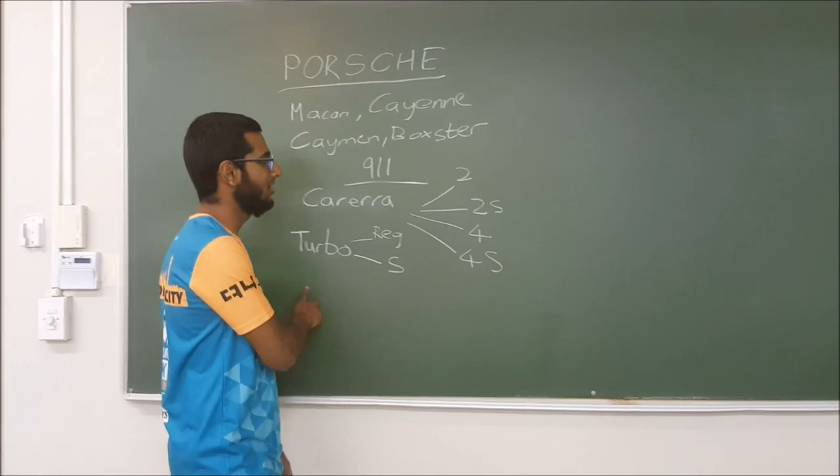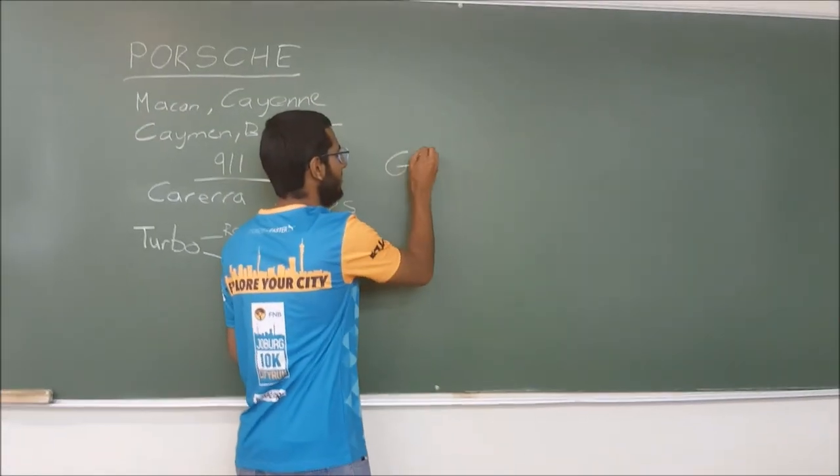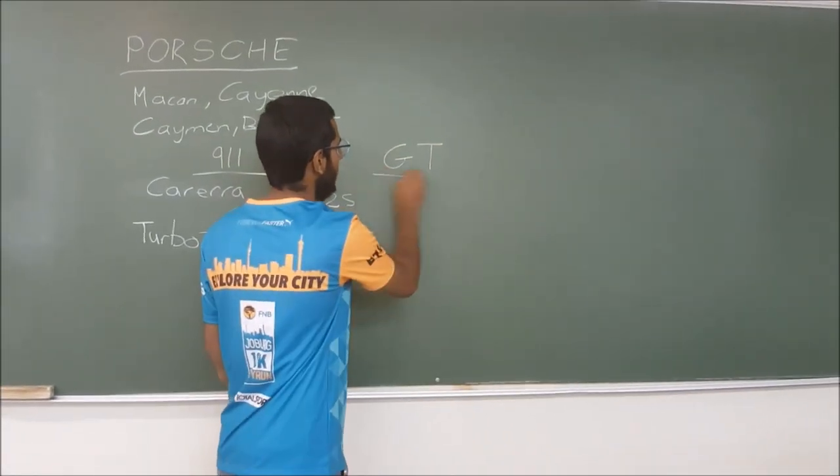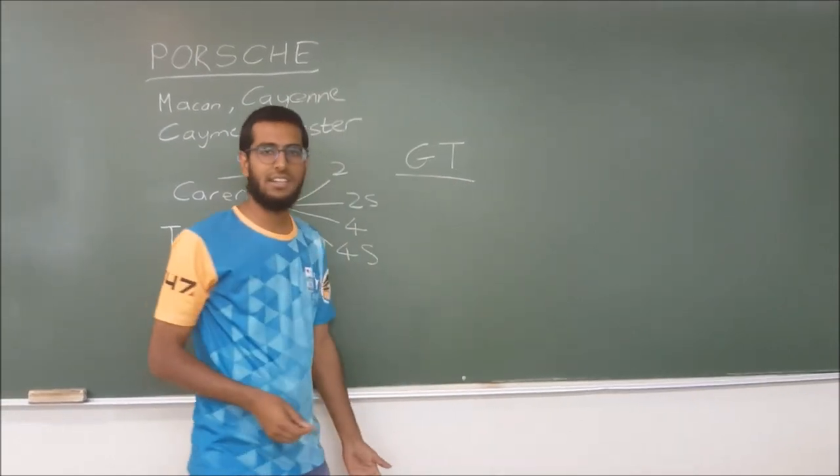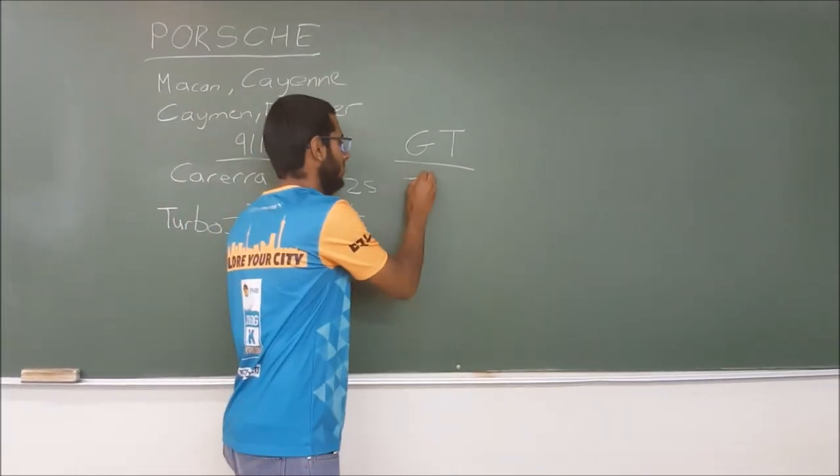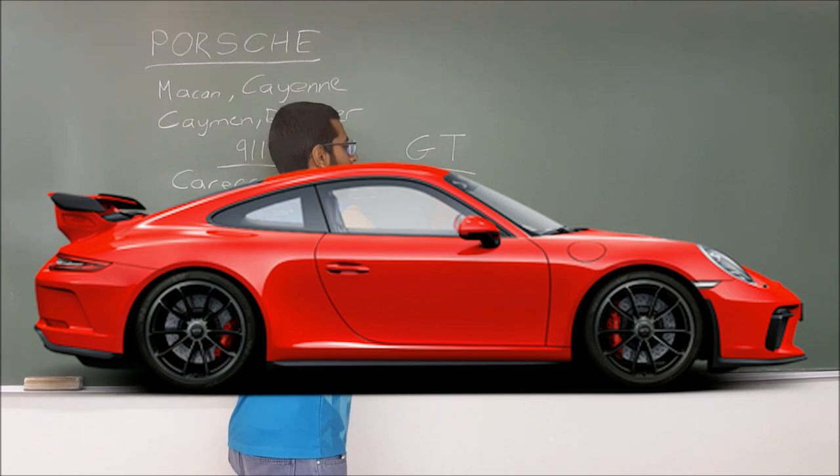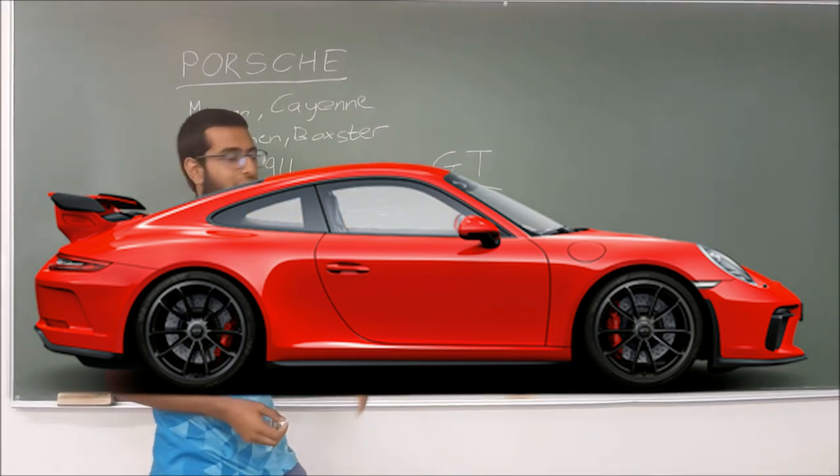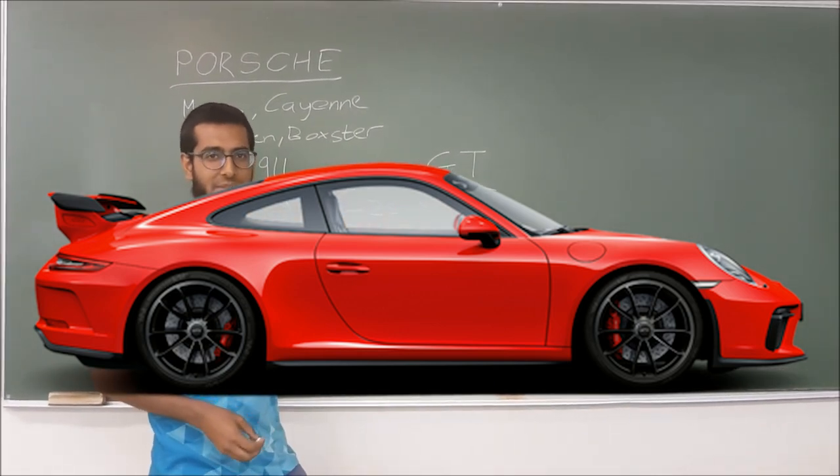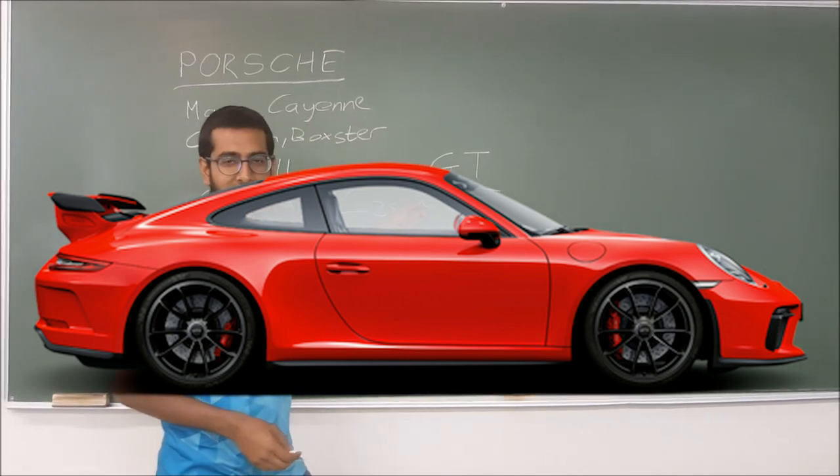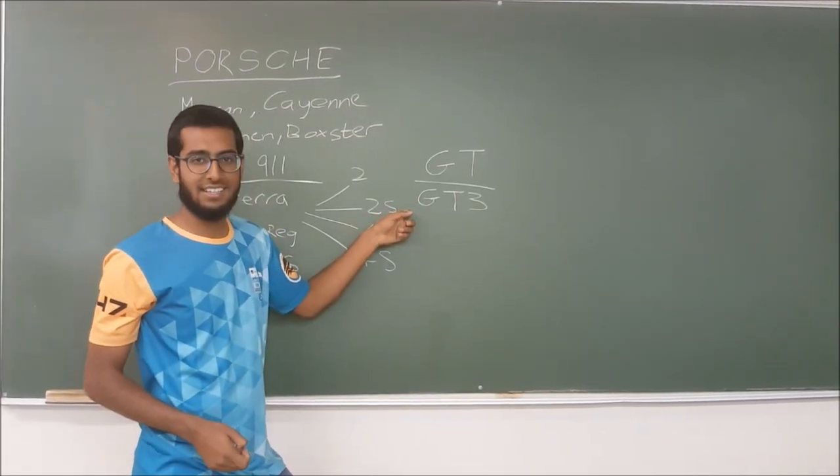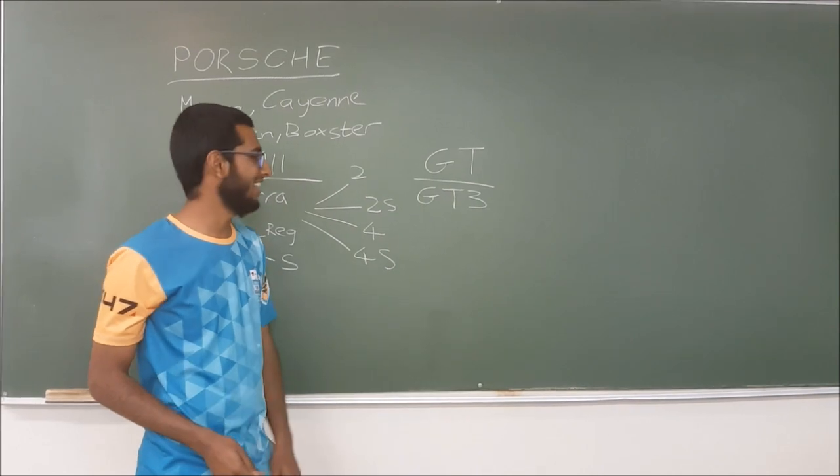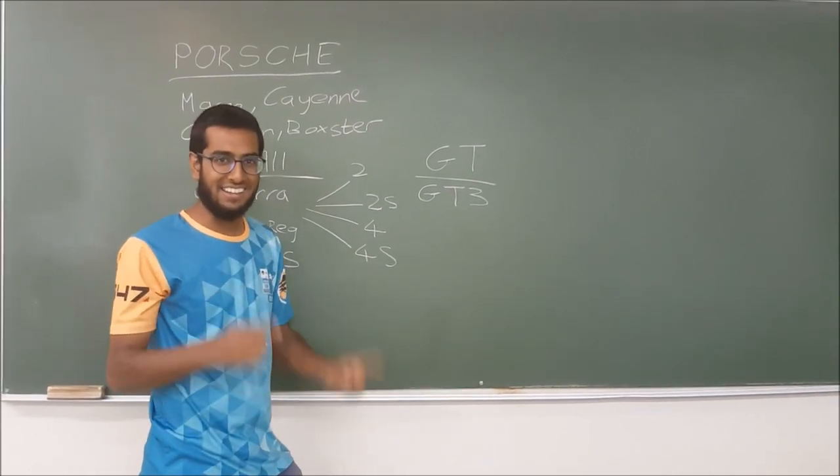Then you got your GT range. The GT range is basically the more track orientated car. So you have your GT3 which is more of a road race car for the street, something that you can drive more often. But the 4 litre naturally aspirated flat 6 revs all the way to 9000 RPM. I'll put a clip of that now.